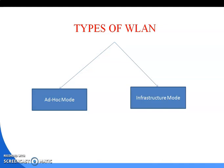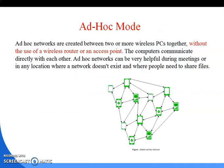Ad hoc networks are created between two or more wireless devices without the use of a wireless router or an access point — the computers communicate directly with each other. Ad hoc networks can be very helpful during meetings or in any location where a network does not exist and where people need to share files. In an ad hoc network, each device has its own capability to maintain the network; no infrastructure or intermediate devices are required to communicate with each other.